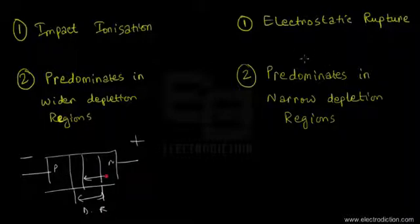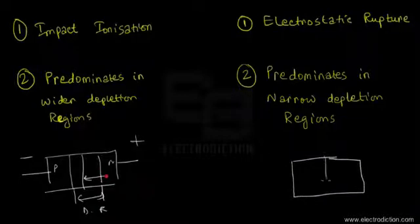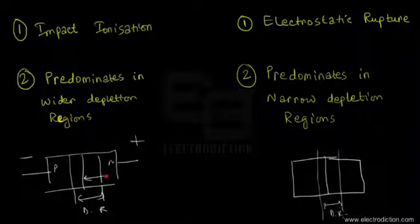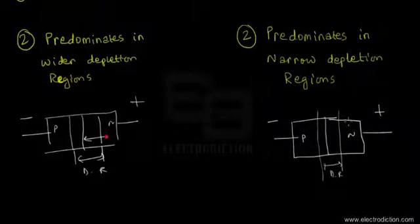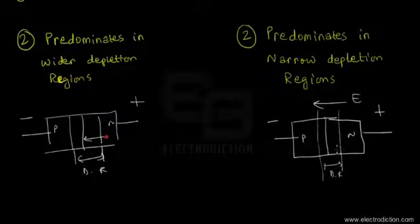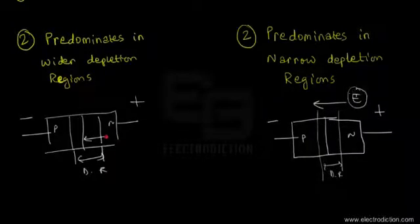The Zener breakdown predominates in narrow depletion regions. Since the Zener breakdown is completely an electrostatic phenomenon, the reverse electric field generated by the applied reverse bias voltage is intensified when the depletion region is shorter in length. In a smaller width of depletion region, the effective electric field per unit length basically increases, and that causes a greater chance of Zener breakdown occurring.